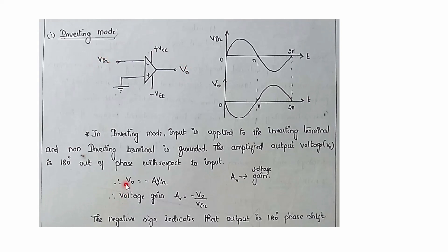In inverting mode, input is applied to the inverting terminal and non-inverting terminal is grounded, so the output voltage has a 180-degree phase shift of input voltage. We can write VO as minus AV times Vin. The minus represents the 180-degree phase shift between input and output. VO is an amplified version of the input voltage, so there is amplification — that is the voltage gain AV. Therefore AV equals VO divided by Vin equals minus Rf divided by R1, where negative represents the 180-degree phase shift.